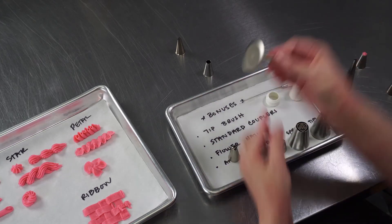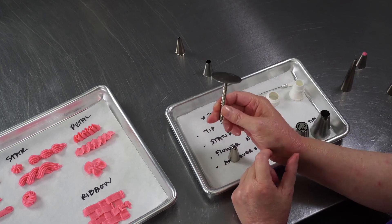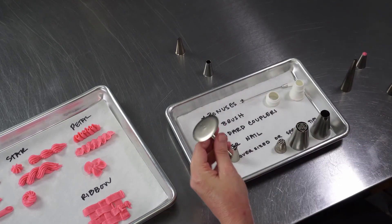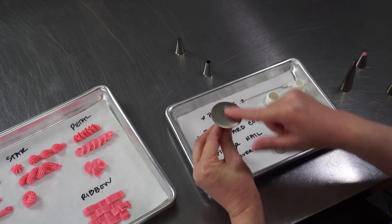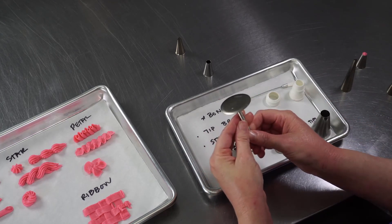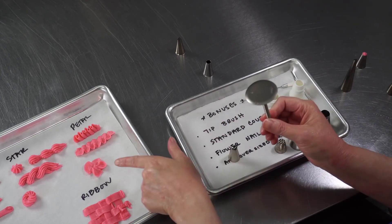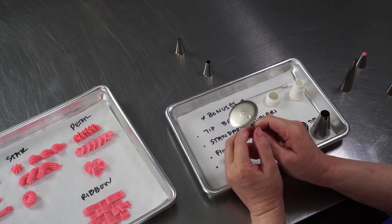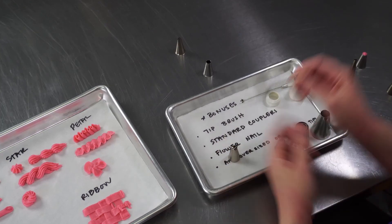The other thing that often comes with tip kits are a flower nail. So you can use this to pipe flowers on top. That'll help you because you could turn your flower nail and it keeps you from having to do what I did on the tray, which was turn the tray, which is big and awkward.